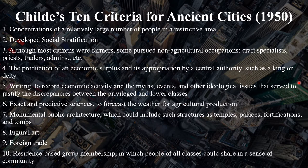The first of Childe's criteria for ancient cities is that a settlement, in order to be considered a city, must have concentrations of a relatively large number of people in a restricted area. Second, this settlement must have developed social stratification. Third, although most of the citizens of the settlement would have been farmers or involved in some kind of agricultural labor, some pursued non-agricultural occupations: craft specialists, priests, traders, administrators, warriors, etc. Fourth, the production of an economic surplus and its appropriation by a central authority, such as a king or a deity, must take place.